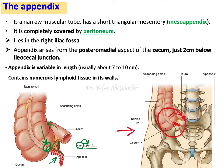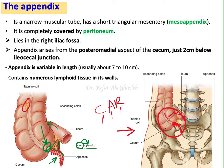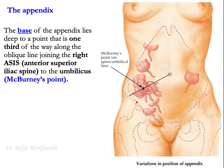The appendix arises from the posterior medial aspect of the cecum, just two centimeters below the ileocecal junction. It is about seven to ten centimeters long, though variable. Histologically it contains numerous lymphoid tissue in its wall. Notably, the appendix has no teniae coli and no omental appendices — along with the rectum, it lacks teniae coli, and along with the cecum and rectum, it lacks omental appendices.